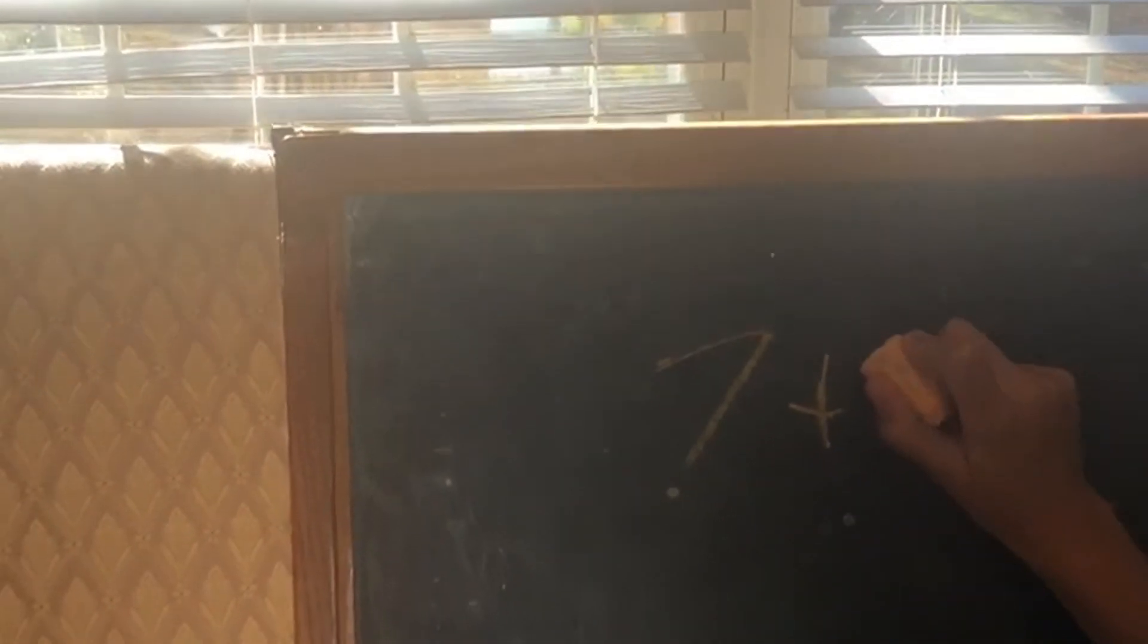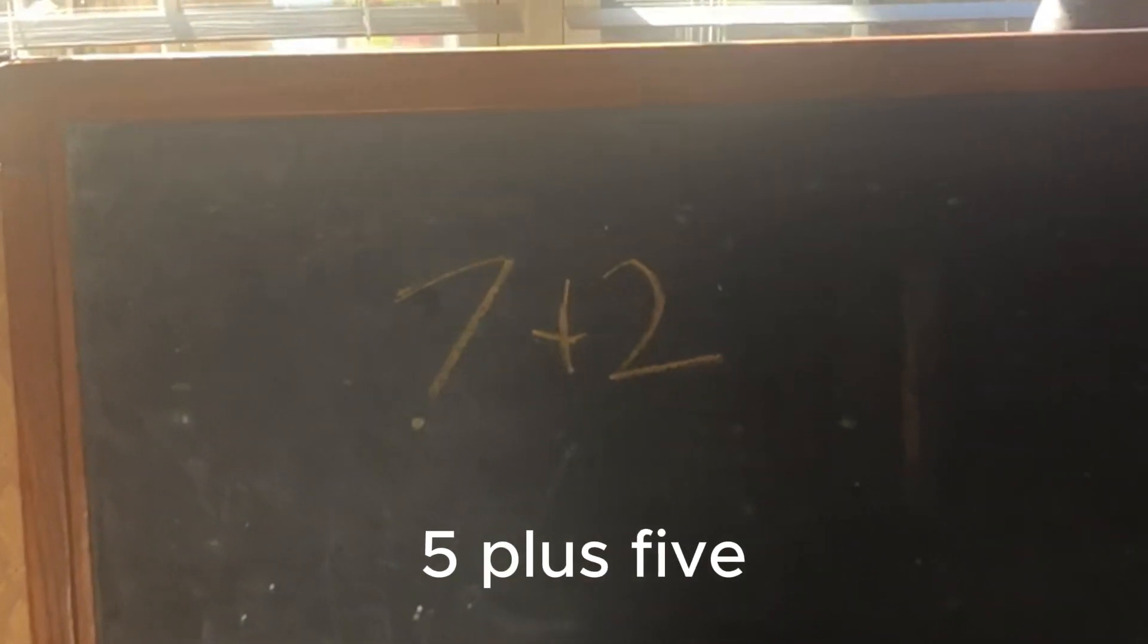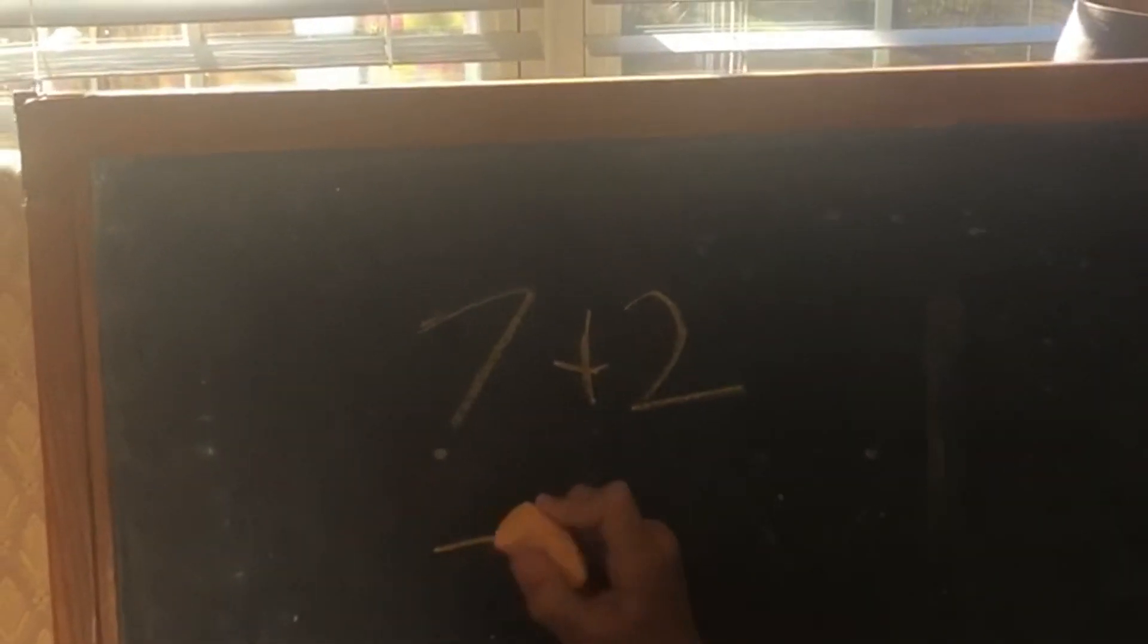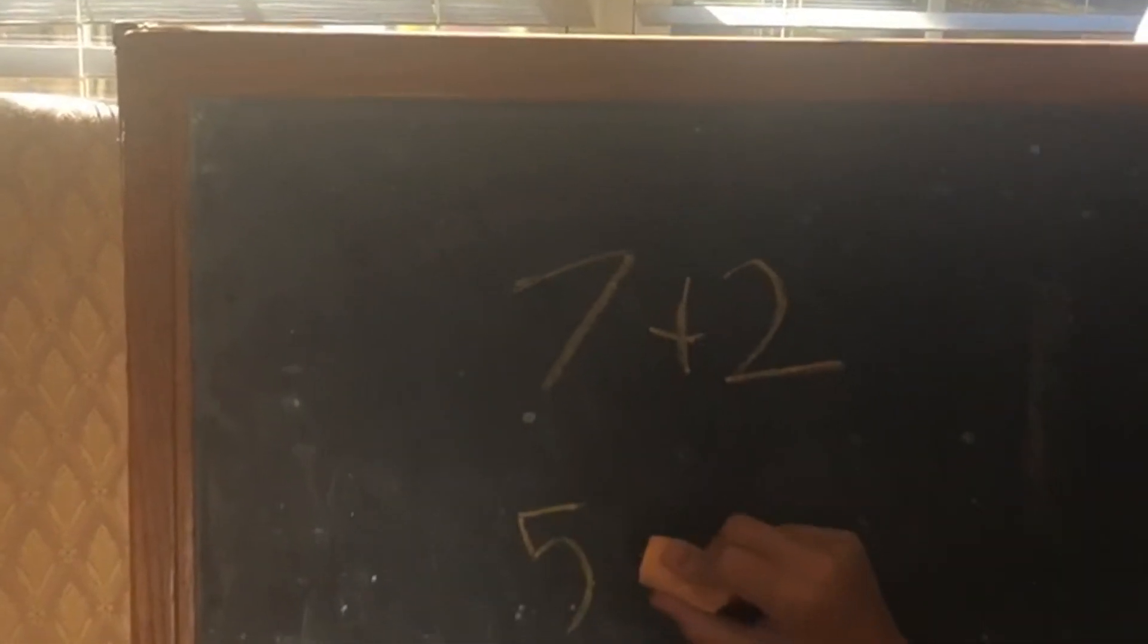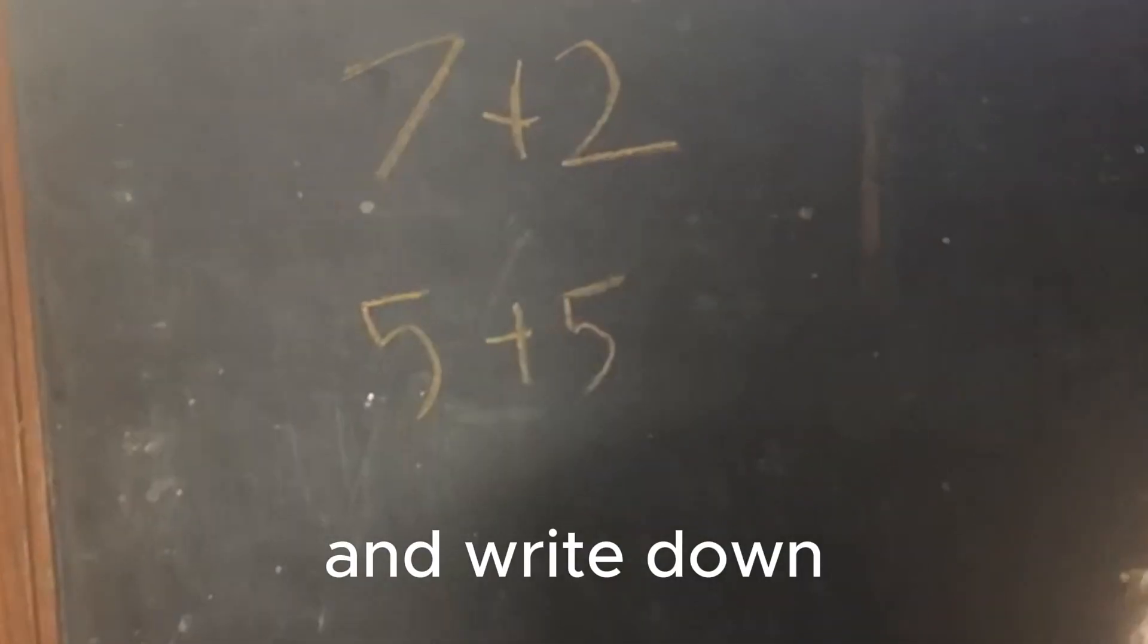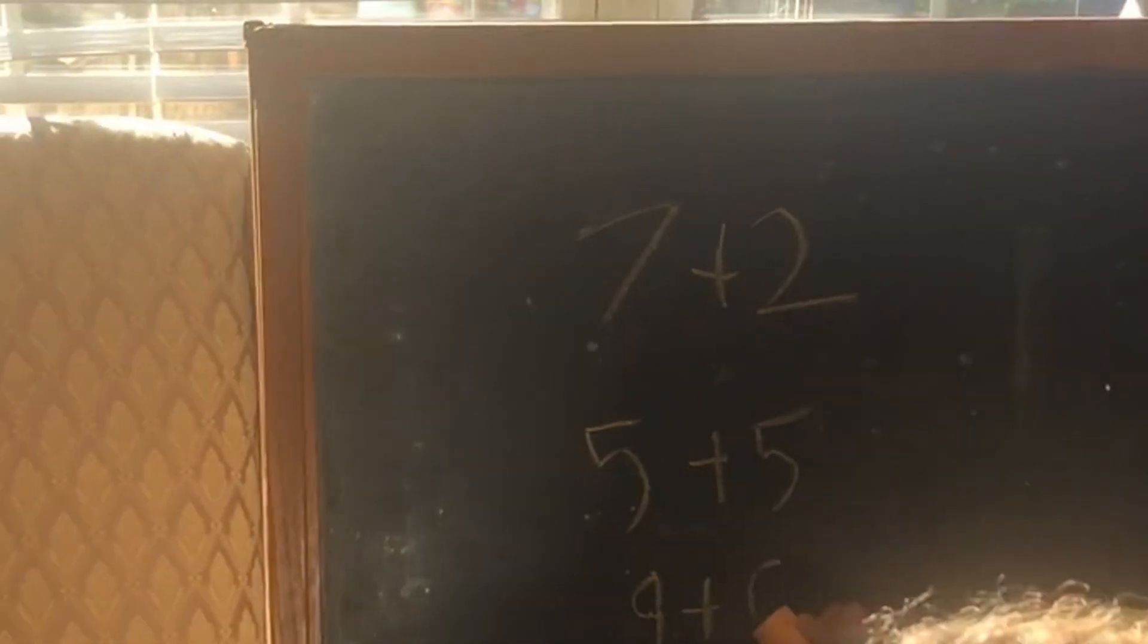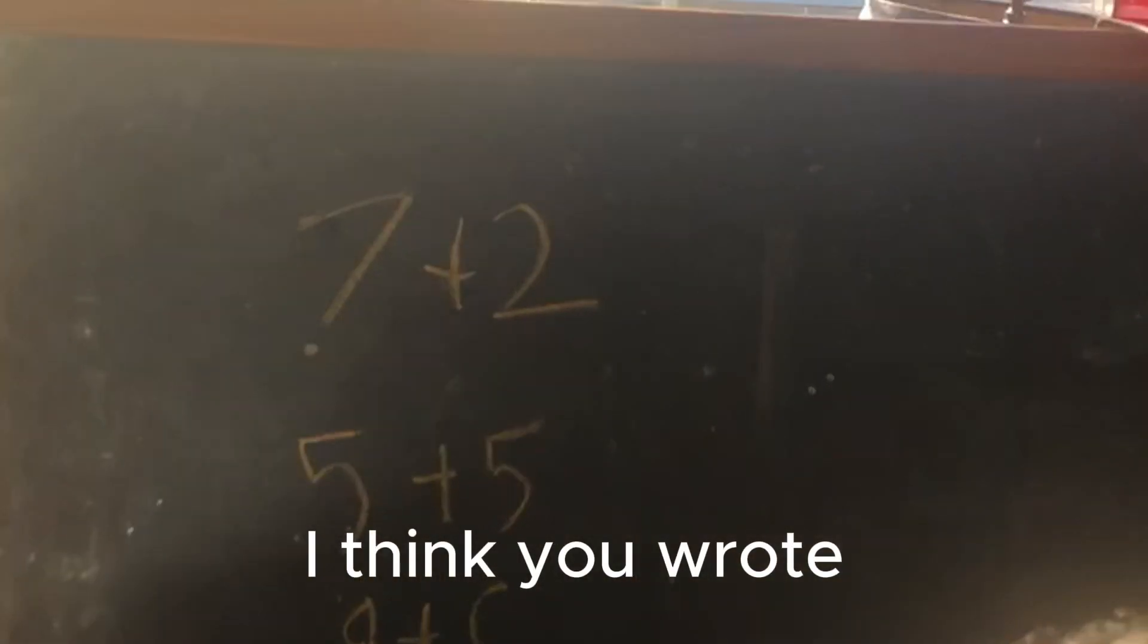Write down seven plus two, and write down five plus five, and write down nine plus three. I think you wrote your three backwards.